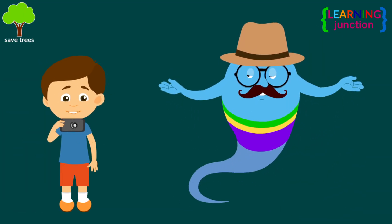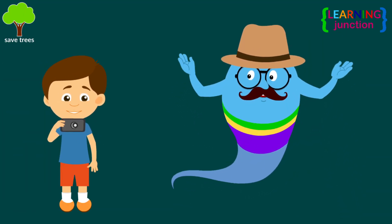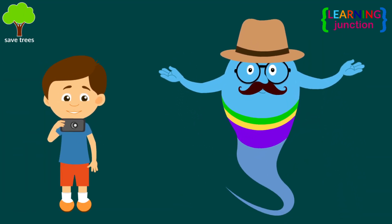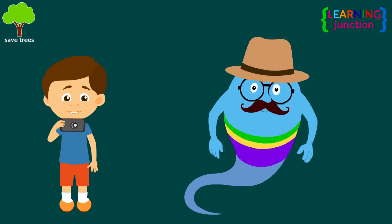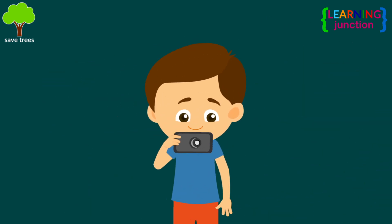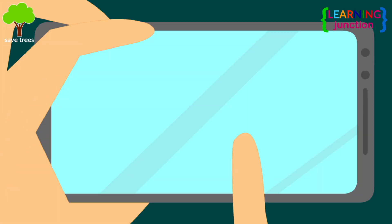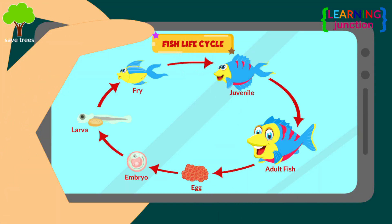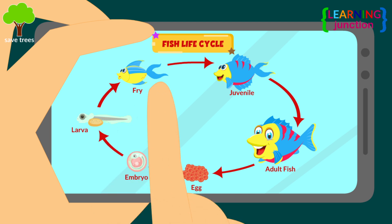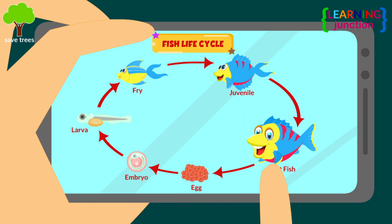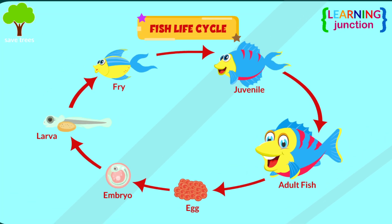You have prepared a chart of the fish life cycle. Can you show it to your friends? Fish life cycle. The stages are egg, embryo, larva, fry, juvenile, and adult. You can use it for your assignments.